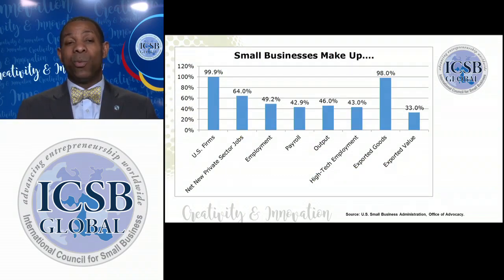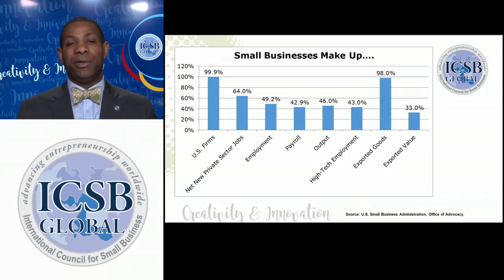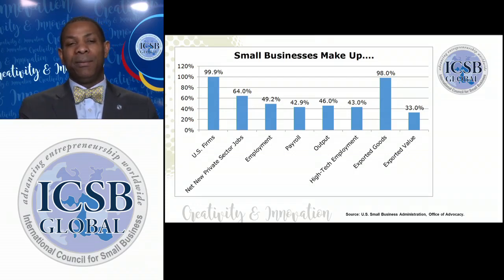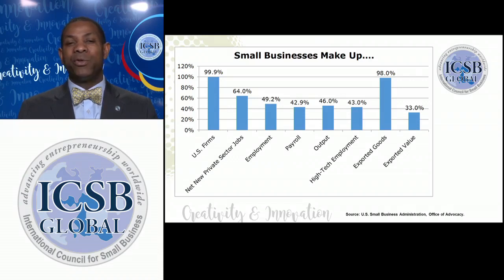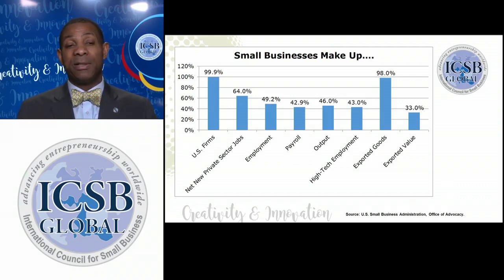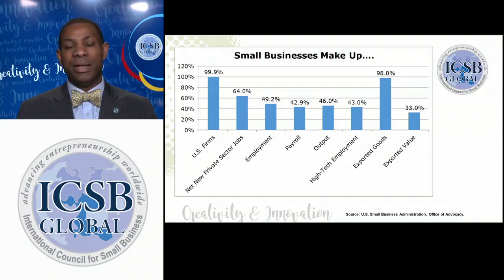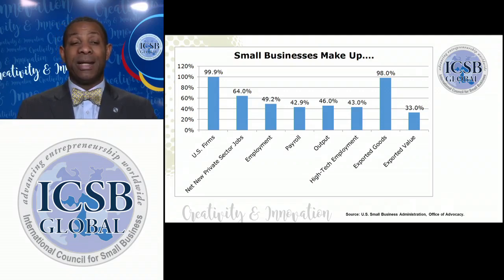Why is this a big deal? We look at creativity and entrepreneurship to make an impact in the marketplace, and technology makes it into the marketplace many times through a small business. What role do small businesses play in the makeup of our economy? In the United States, 99.9% of all firms are classified as small business. There are roughly 29 million firms within the U.S., and 99.9% of those are classified as small business — those with 500 employees or less.